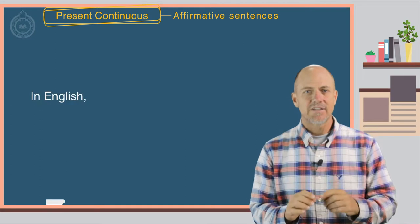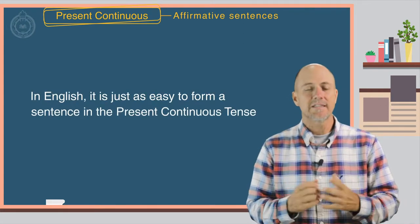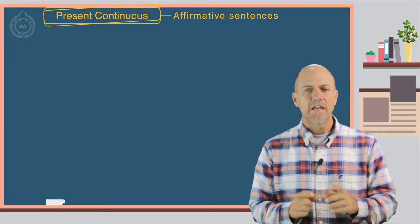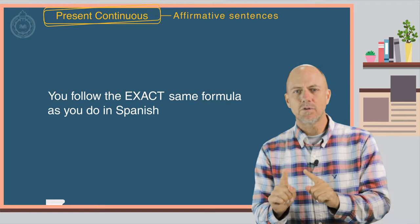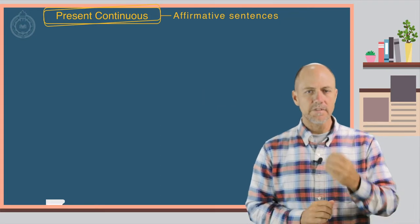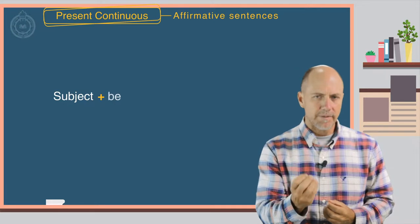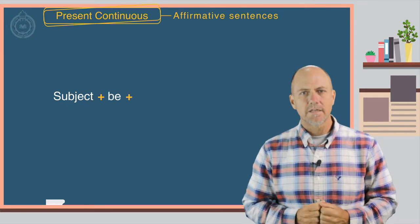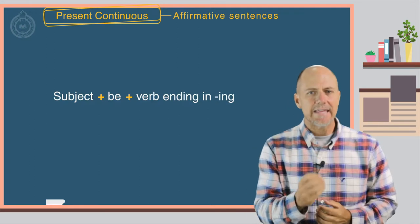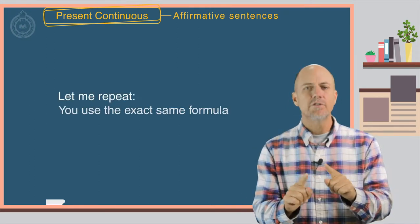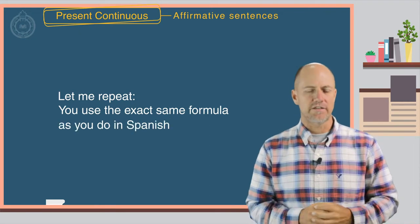In English, it is just as easy to form a sentence in the present continuous tense. You follow the exact same formula as you do in Spanish: subject plus the verb be plus the main verb ending in ing. Let me repeat, you use the exact same formula as you do in Spanish.